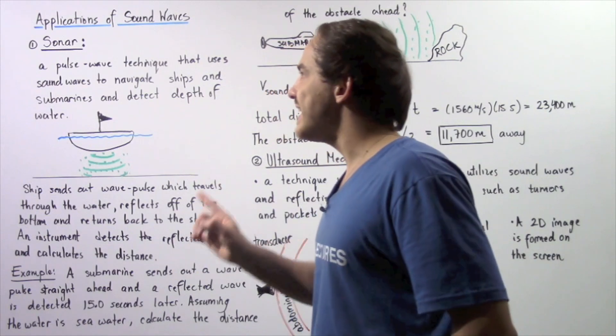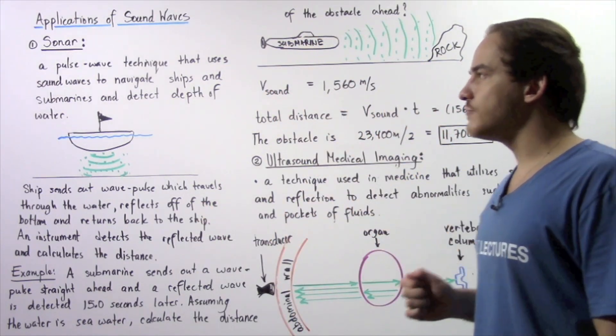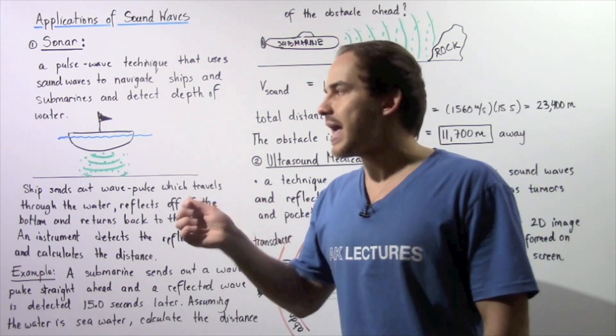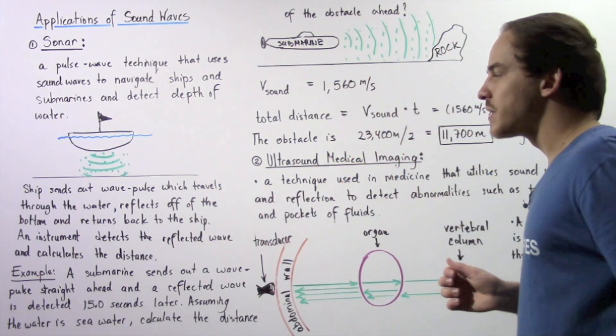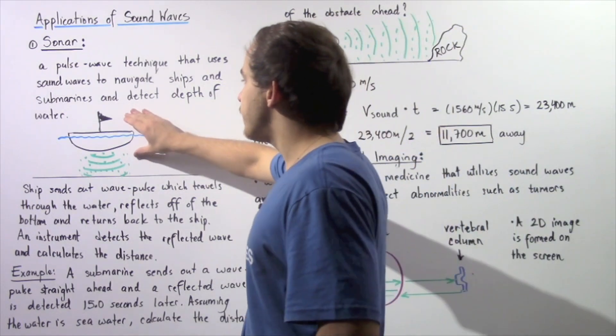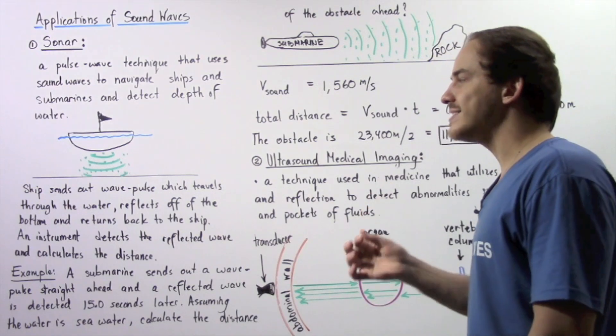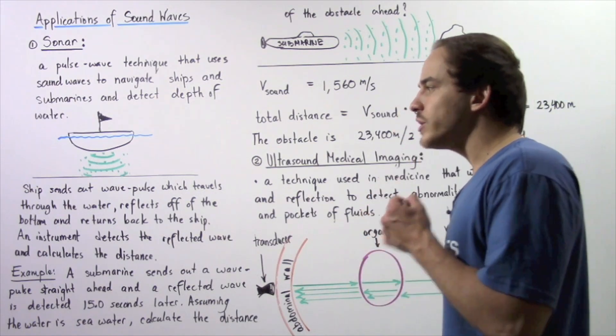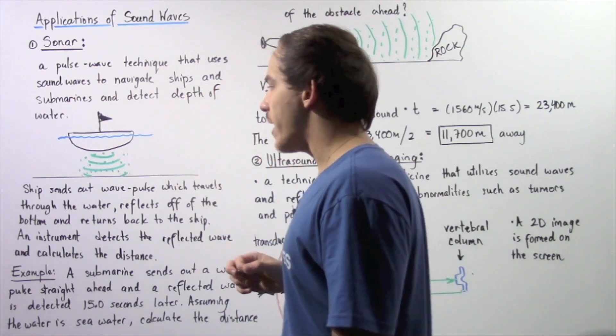Sonar is a pulse wave technique that uses sound waves to navigate ships and submarines and detect the depth of water. Let's suppose we have the following ship. The ship contains a special instrument known as a transmitter that creates and emits a sound pulse, a pulse wave.